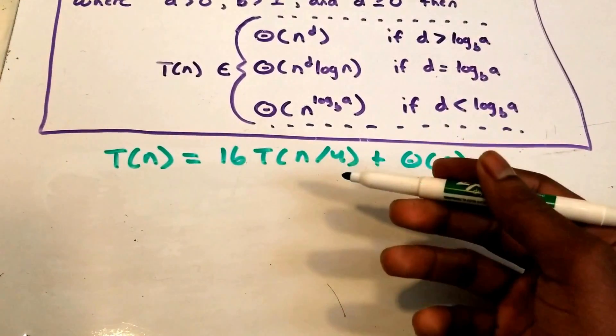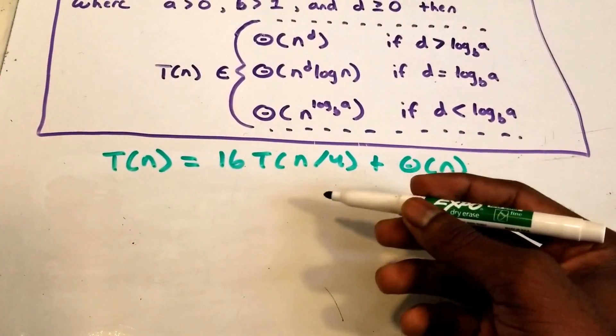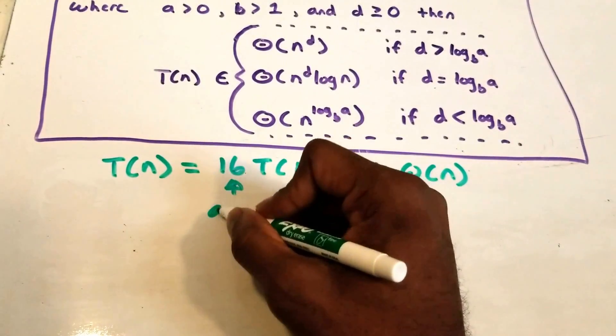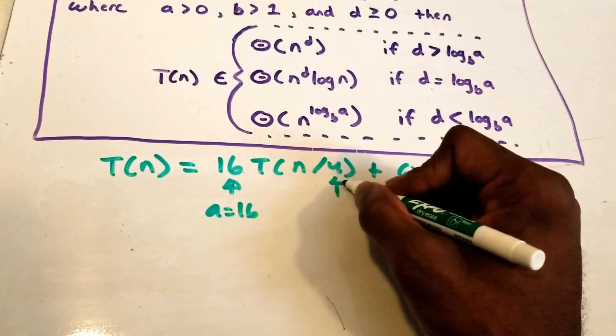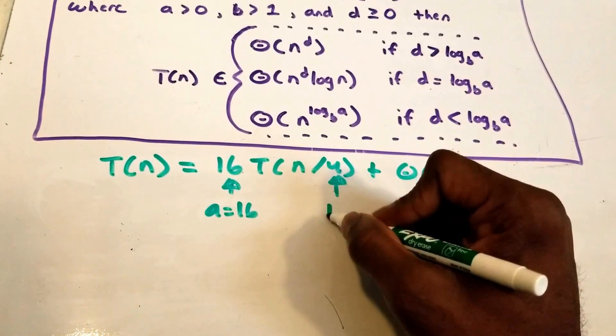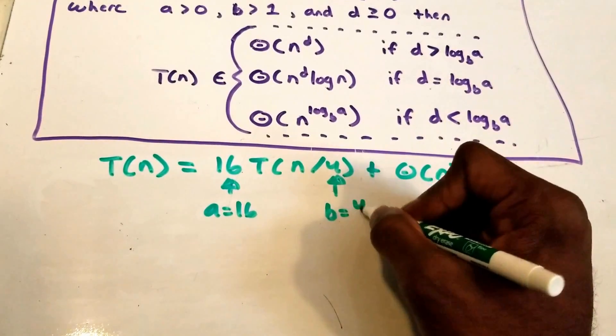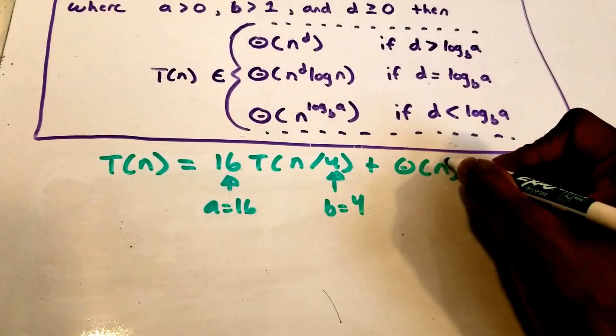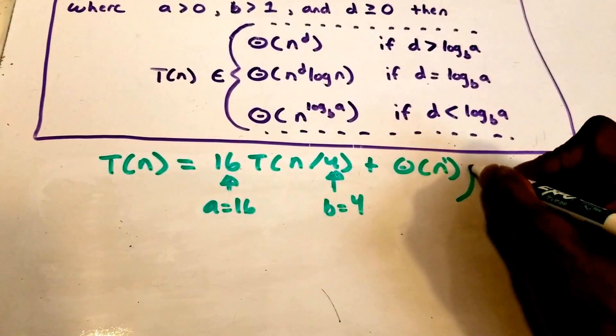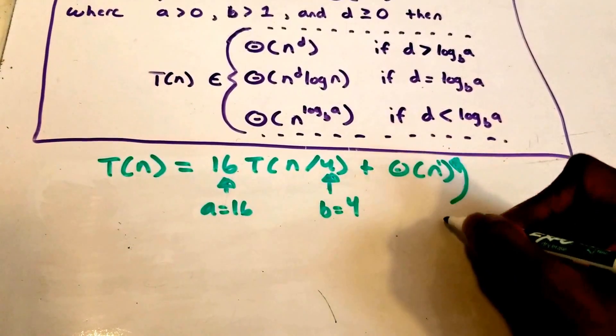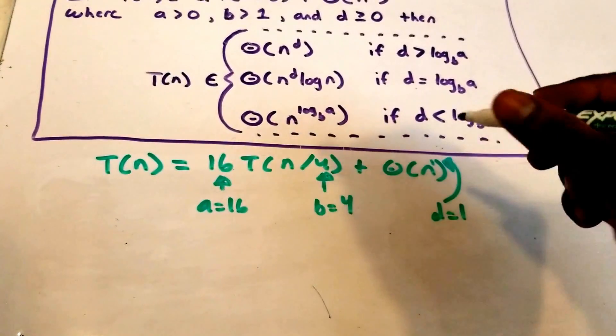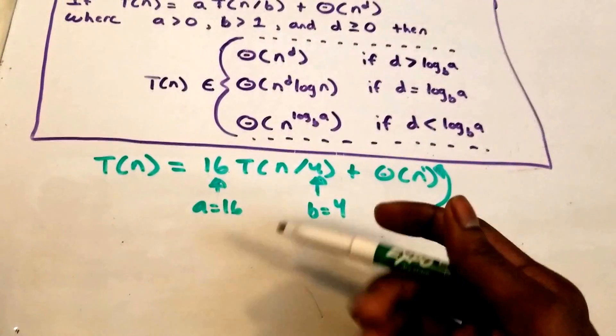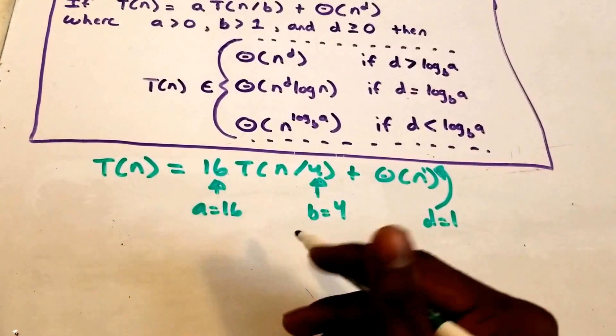All right, so now we need to figure out what our a variable is, our b variable and our d variable. So here we have a, so our a equals 16. Here we have our b so our b is equal to 4 and our d is actually right up here. It's an implicit one. So d equals 1. So in this case our function was already in that form and we just had to figure out our a, b, and d variables.